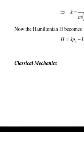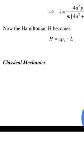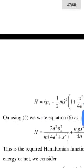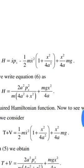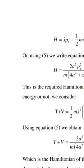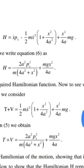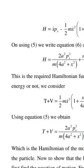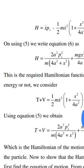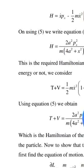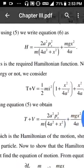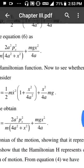The Hamiltonian H is defined as H = ẋ·Px - L. Using the expression for Px and the Lagrangian, the Hamiltonian becomes: H = 2a²Px²/[m(4a² + x²)] + mgx²/4a. This is the required Hamiltonian function.